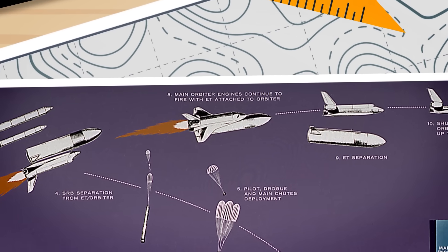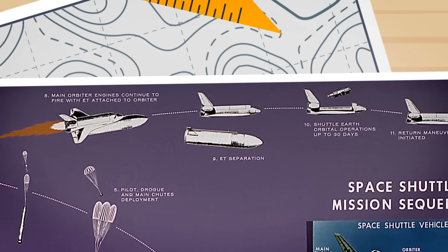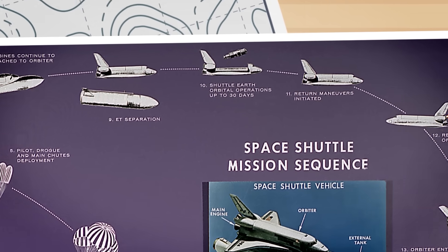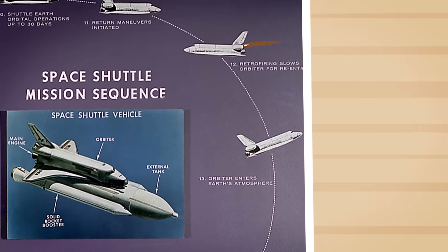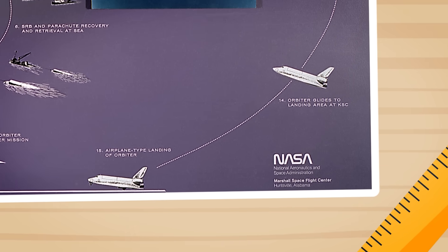The solid rocket boosters would be jettisoned from the craft before reaching orbit as the main engines continued powering it. Then, after the main engine cut off and the craft prepared to enter a steady orbit, the external tank was jettisoned as well. When it was time for the craft to re-enter the atmosphere, its thermal protection system kept it safe from the high temperatures, and then it executed a runway landing as a space plane.